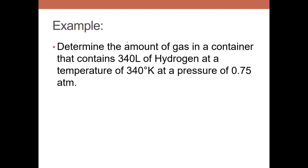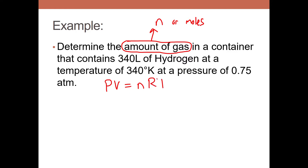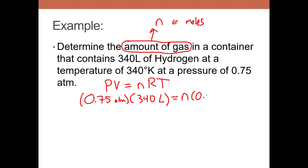We're finding the amount of gas — that means we're finding n, the moles of gas. The ideal gas equation is PV equals nRT. Substituting in values: pressure is 0.75 atmospheres, volume is 340 liters, n is unknown, R is 0.082057 (since we're in atmospheres), and temperature is already given as 340 degrees Kelvin.